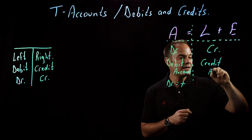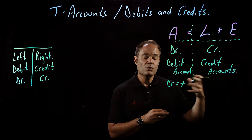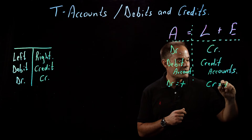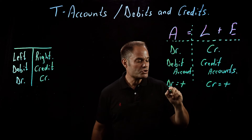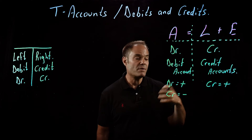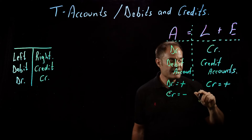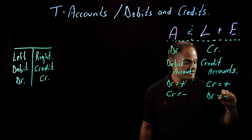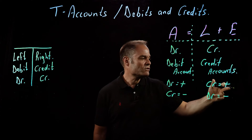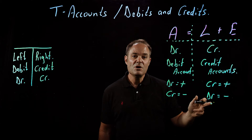work exactly the opposite way. I told you this gets confusing. When we want to increase a liability or increase an equity account, we credit it. On this side, a credit equals a plus. The opposite holds true. A credit to an asset is a minus. If I want to decrease cash, I would credit cash. If I wanted to decrease the amount of equipment I had, I would credit equipment. A debit over here is a minus. If I increase a bank loan — a bank loan is a liability — if I want to increase it, I would credit the bank loan. If I want to decrease it, I would debit the bank loan.